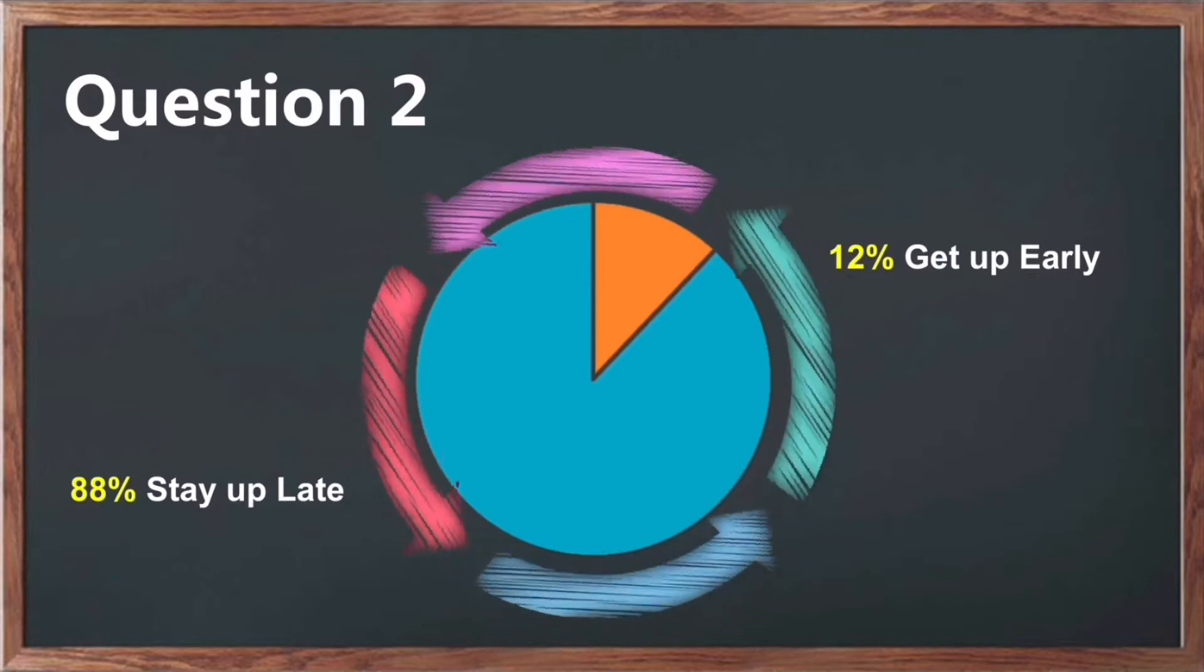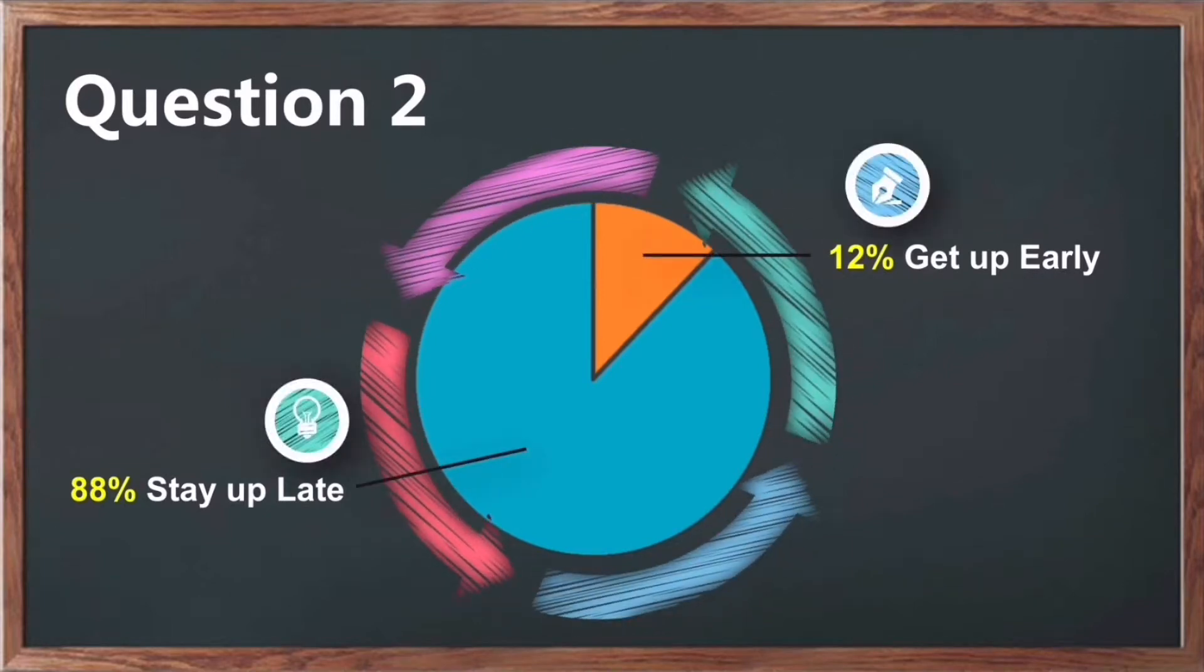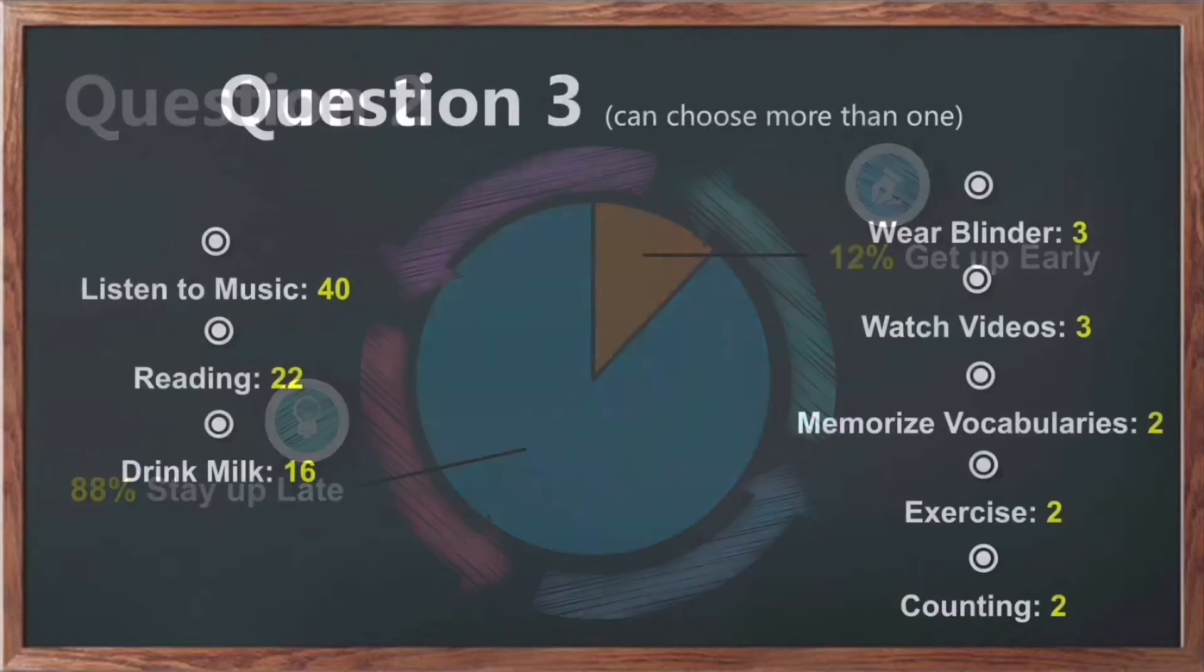In the second question, asking whether people want to stay up late or get up early for their unfinished work, the result is still very shocking for us. Only 12% of the people choose to get up early. But is that the most efficient way? There are still a lot of things to be considered.